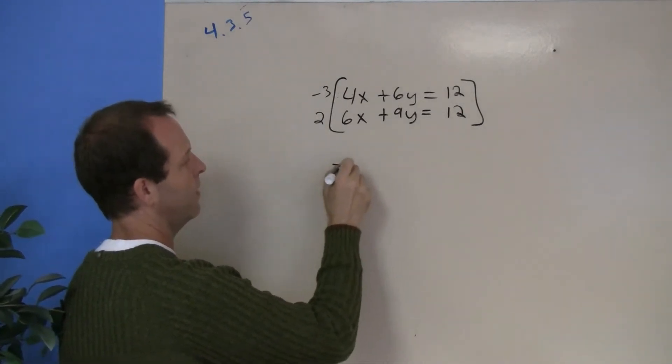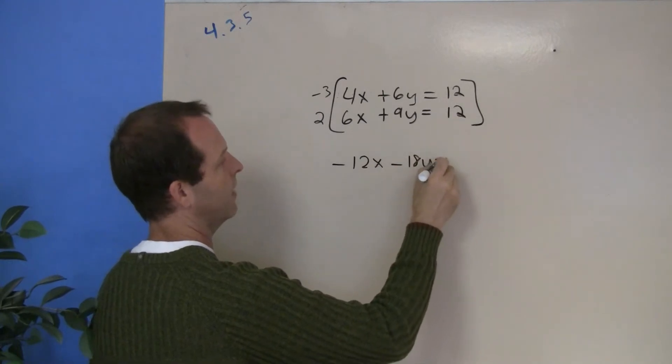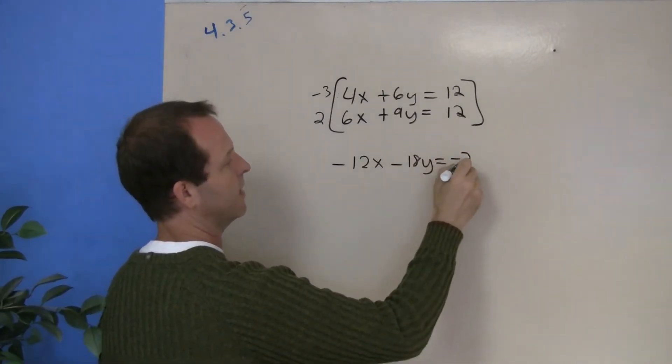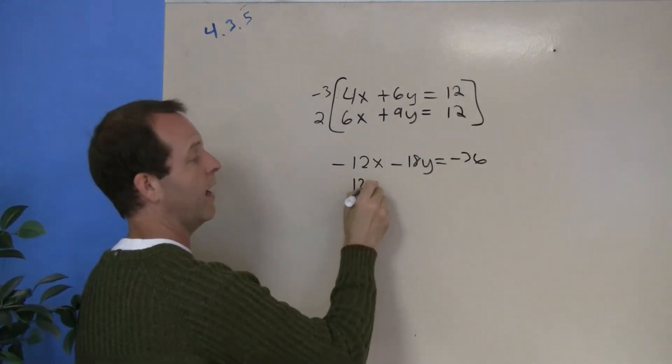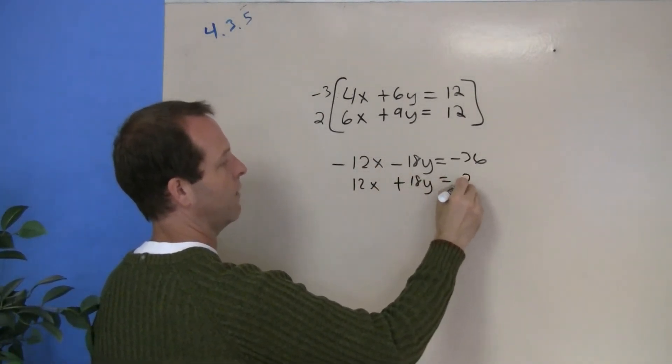So let's multiply that 3 through: negative 12x minus 18y equals negative 36. The second one is 12x, yep they will eliminate, plus 18y equals 24.